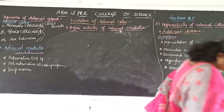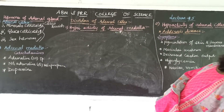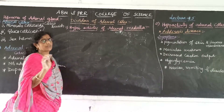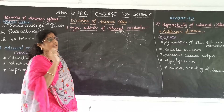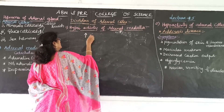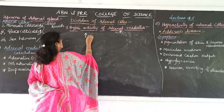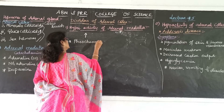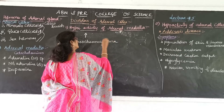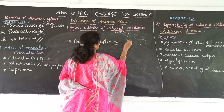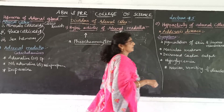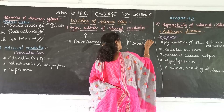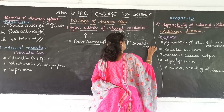Hyperactivity of the adrenal medulla occurs when the adrenal medulla exhibits excess activity. Excessive secretion of adrenal medullary hormones — that is, excessive secretion of catecholamines — causes a disease called pheochromocytoma.